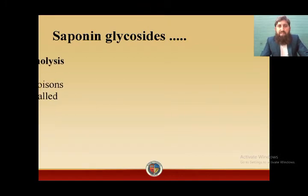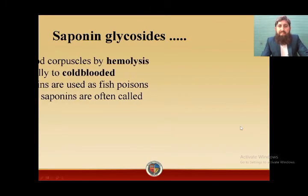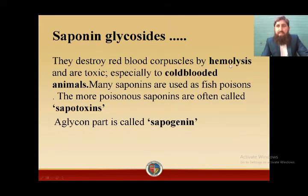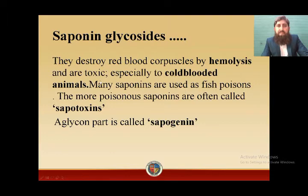Sternutatory compounds are those which cause or result in sneezing, and they are also irritating to the mucous membrane. Further properties of saponin glycosides are that they destroy red blood corpuscles by hemolysis. Heme means blood and lysis means breakdown — breakdown of blood. So saponin glycosides destroy red blood corpuscles by hemolysis and are very toxic, especially to cold-blooded animals like amphibians and reptiles.